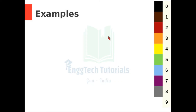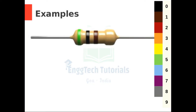Let us take the first example of a 3 band resistor. The first color is green, and green corresponds to digit 5, so we write 5. The next color is black, and black corresponds to digit 0, so we write 0. The third color is the multiplier — we multiply the previous two digits by 10 raised to the power of the number corresponding to the third color. Here the third color is brown, and brown corresponds to digit 1, so we write multiplied by 10 raised to 1. 10 raised to 1 is nothing but 10.